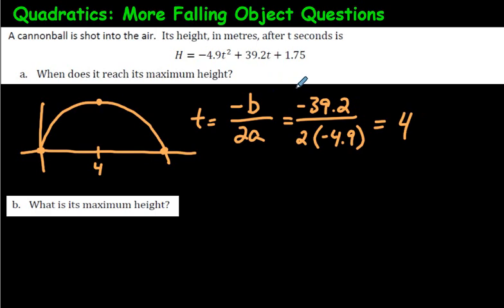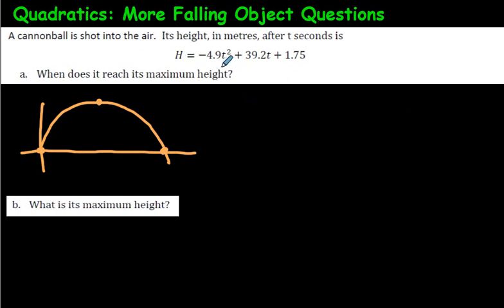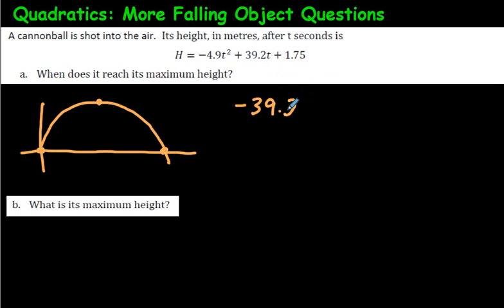Now I'll show the answer the way your teacher would probably prefer — using the quadratic formula. What we'll do is find the two zeros of this equation. Because it's not easy to factor, we'll use the quadratic formula. I have videos on how to use it, so I'll assume you've already watched those. The quadratic formula starts with negative b, which is negative 39.2.